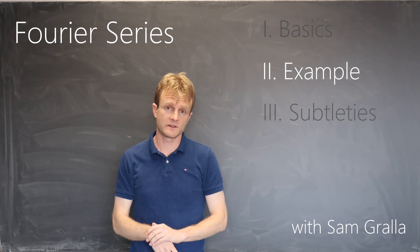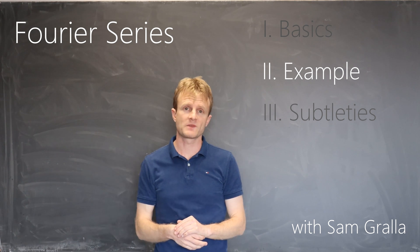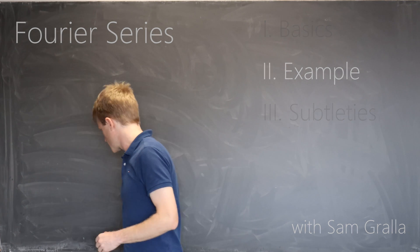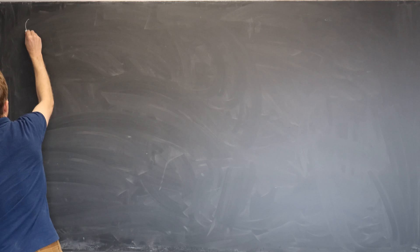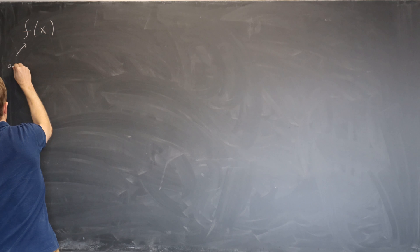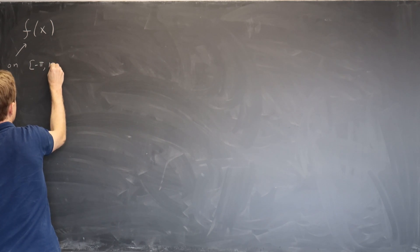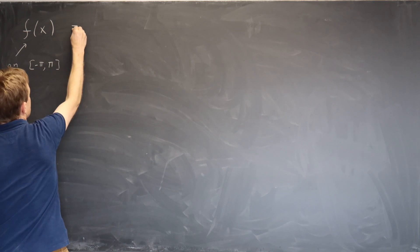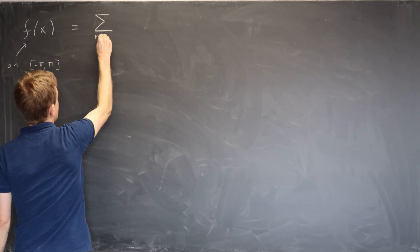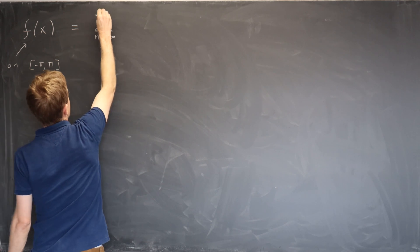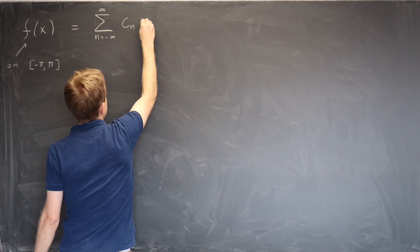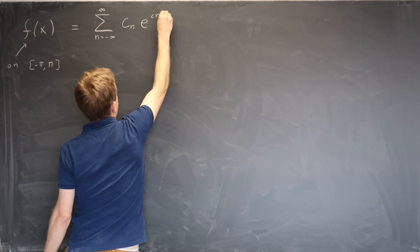This is the second video on Fourier series. In the first video, I introduced the idea, gave you an example, and derived the key formula which says that if you have a function f(x) defined on the interval minus pi to pi, you can write that function as the sum from n equals minus infinity to infinity of some coefficients c_n times e to the inx.